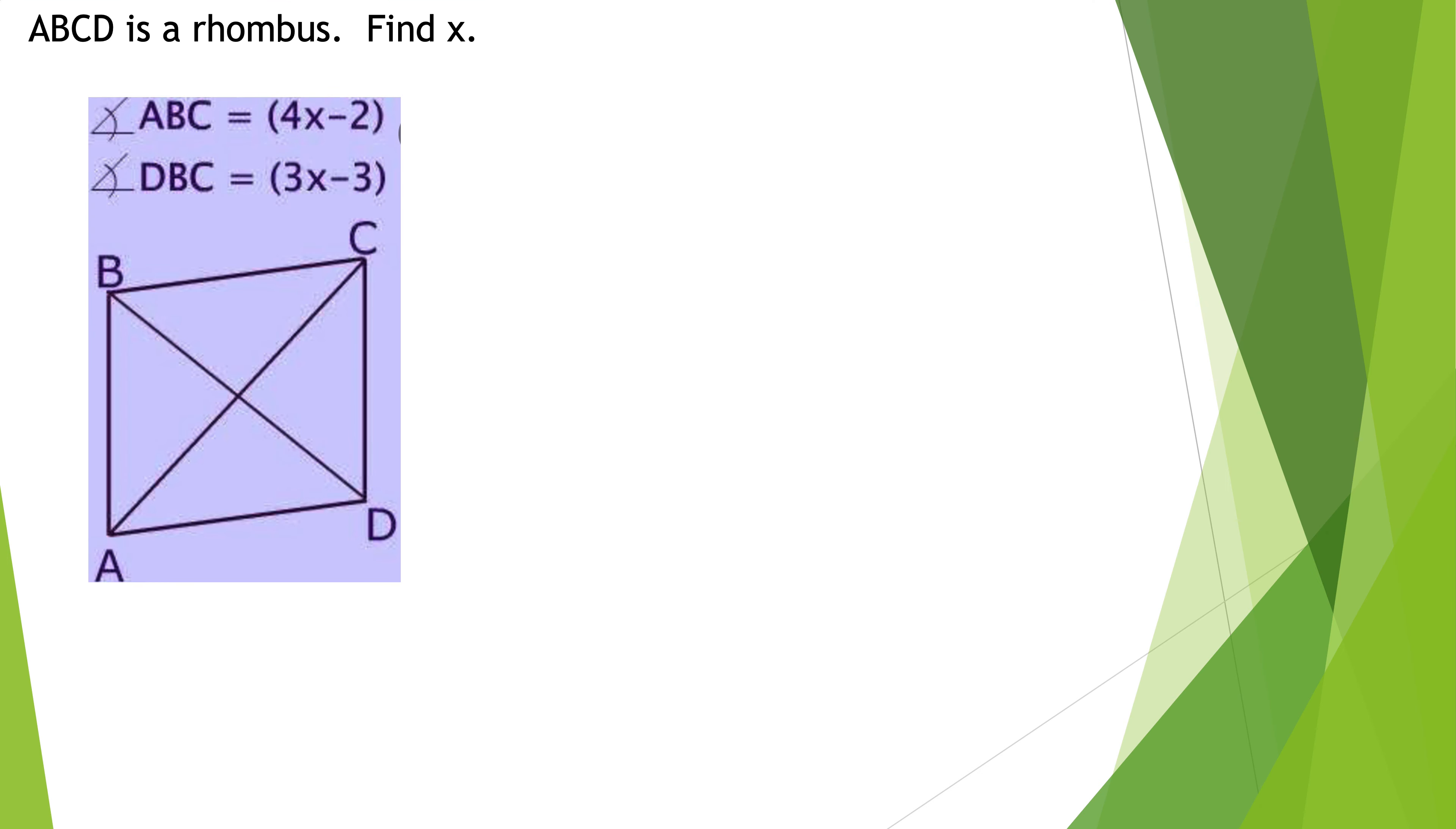So, when I look at a rhombus, this is a very important point right here. The diagonals bisect the vertices. A rhombus is the first parallelogram type we came across that has this property. So, when it says that angle ABC is 4X minus 2, that's the whole angle. When it says angle DBC, that's exactly half of that whole angle because the diagonals bisect the vertices. So, what that tells me is if you double the measure of angle DBC, you're going to get the measure of angle ABC. So, take it from there. Let's see how you do.